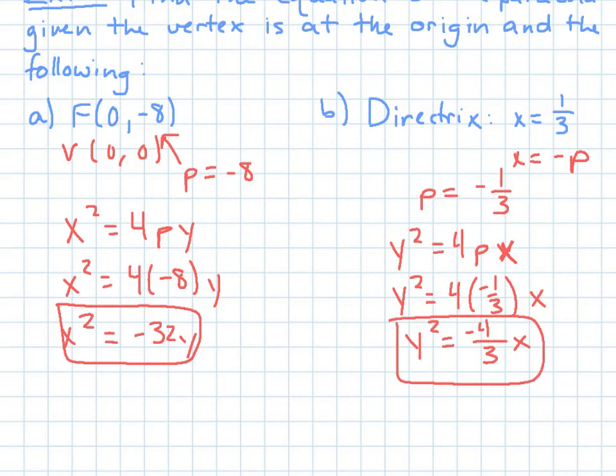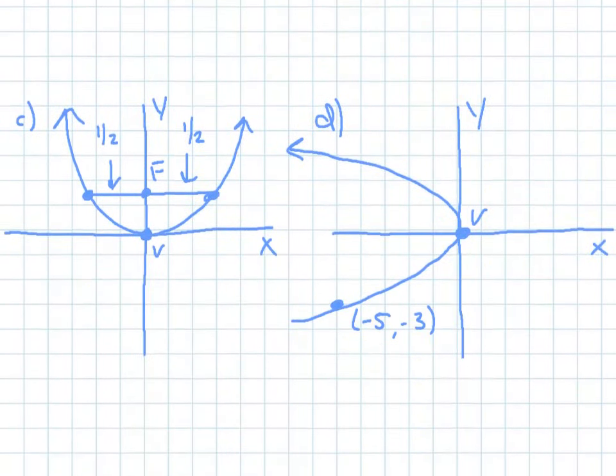Another way of thinking about that is because your directrix is a vertical line, then that means your parabola must open either to the left or to the right. And so it's a horizontal axis because that's what the axis of symmetry would be because it's perpendicular to the directrix. So then it must go with the y squared equation, not the x squared. Okay. So there's some helpful hints. Let's go to some other ones.